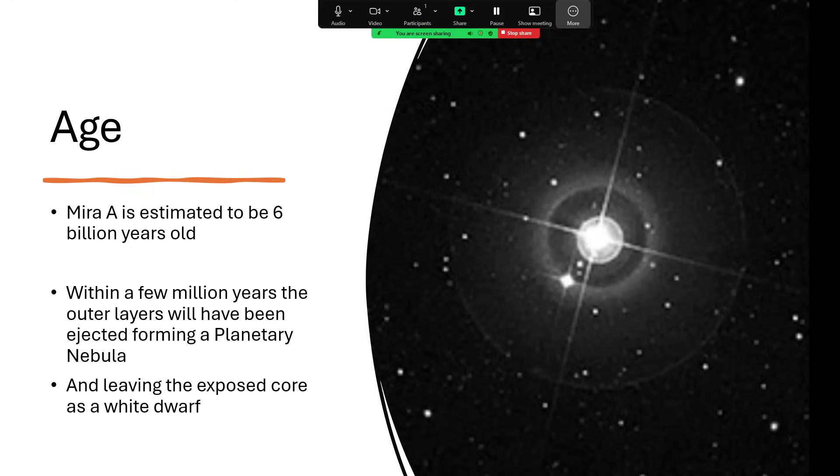Now, it's estimated to be about six billion years old, and that puts it right at the end of its life. Within a few million years, the outer layers will have been ejected completely, shells of gas forming a planetary nebula, and it will leave us with the exposed white dwarf.